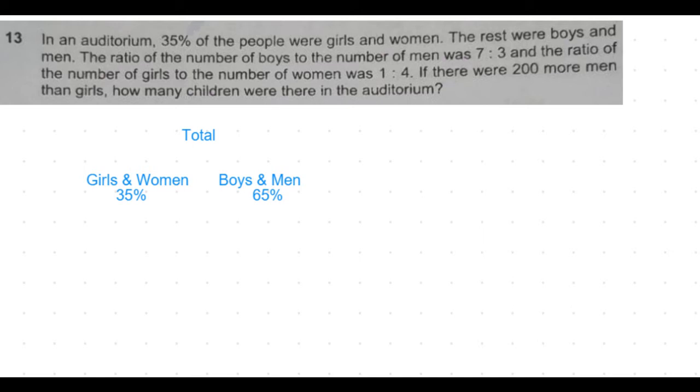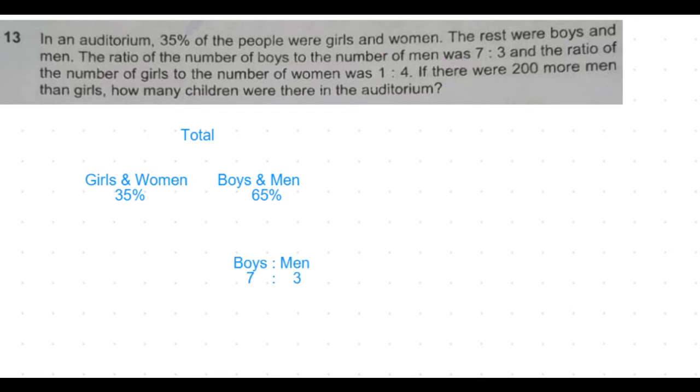Within the 65 percent, the boys to men ratio is given as 7:3, so seven and three together makes 10 parts. If this 10 parts is equal to 65 percent, then one part would be 6.5 percent.